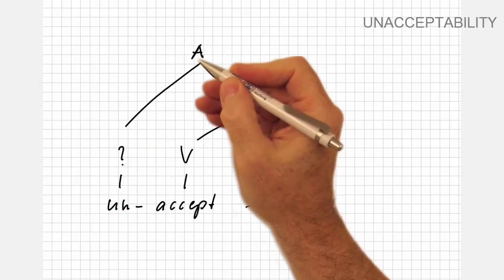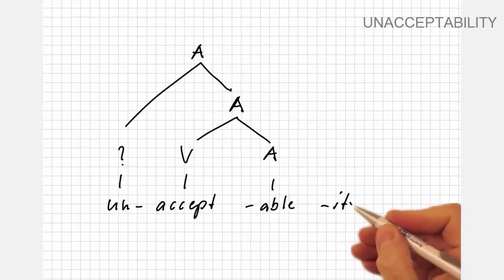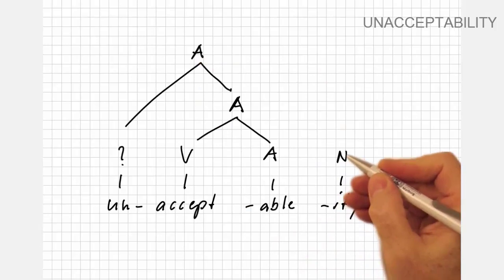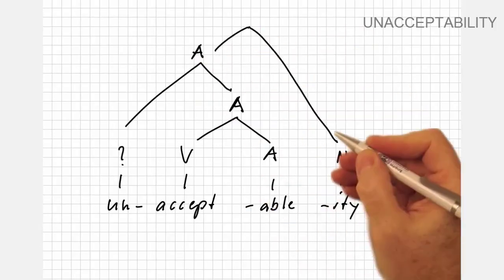The new word class is thus the old one. Unacceptable is still an adjective. To this adjective, we can attach the nominal affix -ity, turning the whole word into a noun.